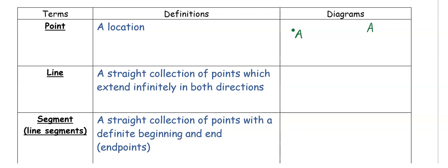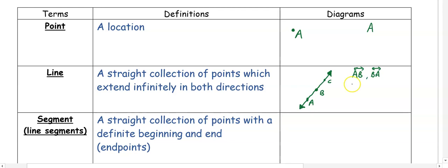A line is a straight collection of points that extends infinitely in both directions. It's made up of many points and has arrows on both ends to show that it goes in both directions. If three points on the line are named A, B, and C, you name the line using two letters with a line symbol with two arrows above them. You can use AB, BA, BC, CB, or RT, TR. Additionally, if a line has a lowercase cursive letter by it, you can also name it by that cursive letter — in this case, the lowercase cursive L.